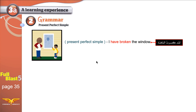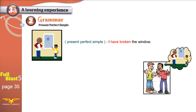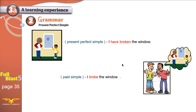The same boy, many years later, after he grew up, he still remembers the incident. And he tells it to a friend and says, 'I broke the window of the house.' In here I used Present Perfect Simple — 'I have broken the window.' And in here I used Past Simple — 'I broke the window.'